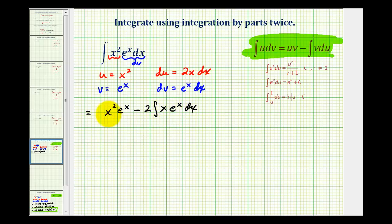But now u is going to be equal to x, so differential u is going to be equal to dx. This leaves dv equal to e to the x dx again, which means v is going to be e to the x.